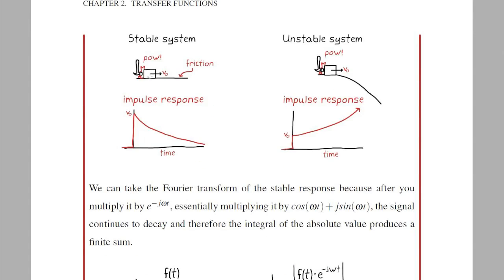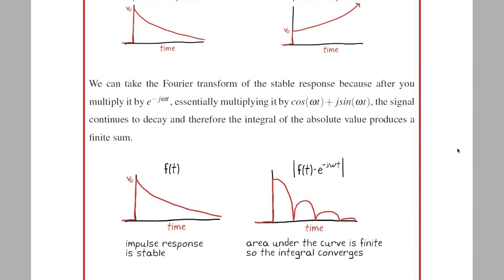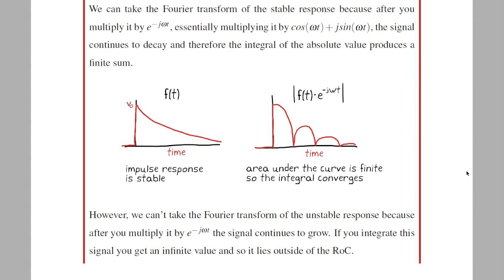To understand this, let's look at the impulse response of a stable system, which decays over time, versus an unstable system, which grows over time. If we multiply the stable response by e to the minus j omega t, the signal will continue to decay, and the area under the absolute value of the curve has a finite value. Since this value is finite, this function is within the region of convergence, and the Fourier transform exists for it.